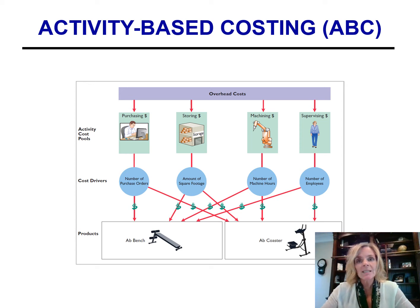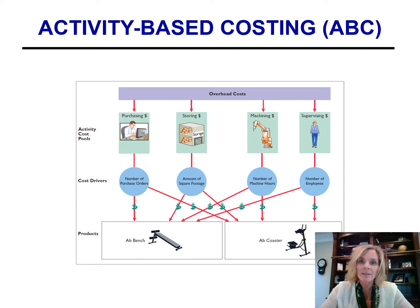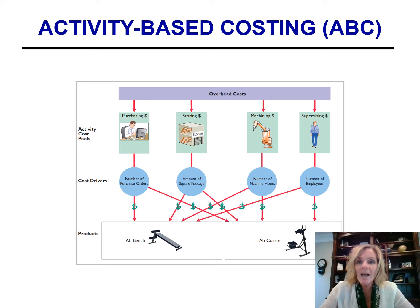The traditional costing systems can mask significant differences in a company's cost structure. As a result, companies found a new method of assigning overhead costs. Activity-based costing, often referred to as ABC, is a powerful management tool that results in a more accurate product costing system, as well as enhanced control over overhead costs.